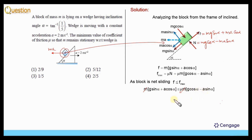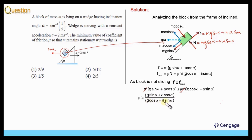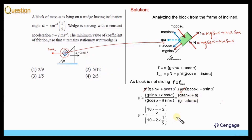So let us write the value of mu. We can take cos alpha as common in numerator and denominator, since we are given the value of tan alpha. In the numerator we will have g tan alpha plus a, and in the denominator we will have g minus a tan alpha. Now we can put the value of tan alpha which is 1/5, g equal to 10 m/s², and a equal to 2 m/s². After substituting the values, we get 20 divided by 48, which simplifies to 5/12. This means option number 2 is the correct option.